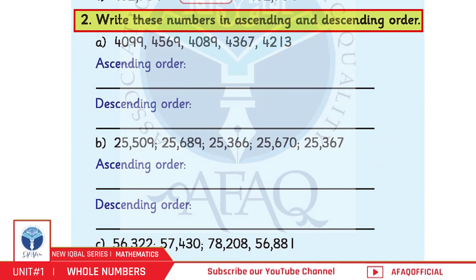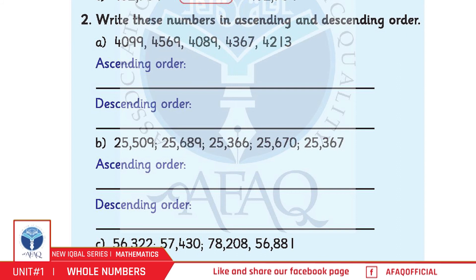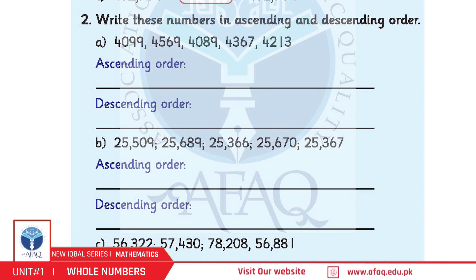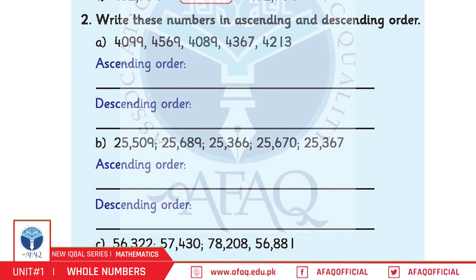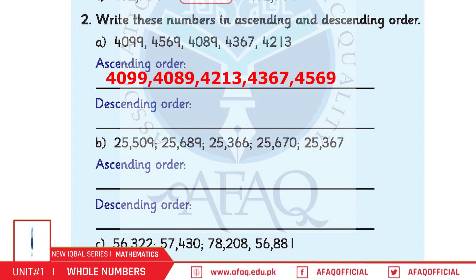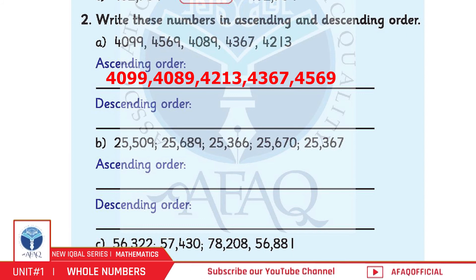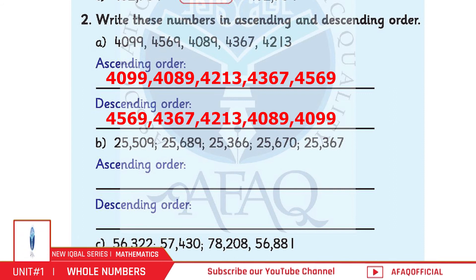Question 2: Write these numbers in Ascending and Descending Order. A: 4,099 / 4,569 / 4,089 / 4,367 / 4,213। बच्चो, इन तमाम numbers को place value chart में लिखकर — छोटा number पहले, फिर बड़ा number — यह Ascending Order होगा। Descending Order के लिए बड़ा number सबसे पहले, उससे छोटा बाद में।